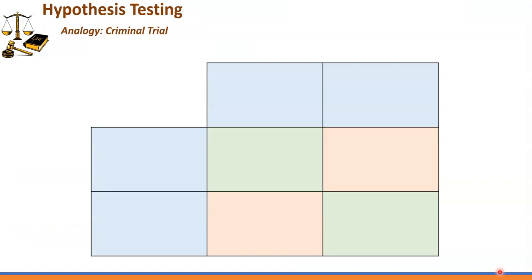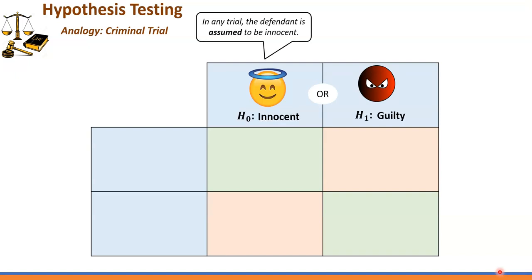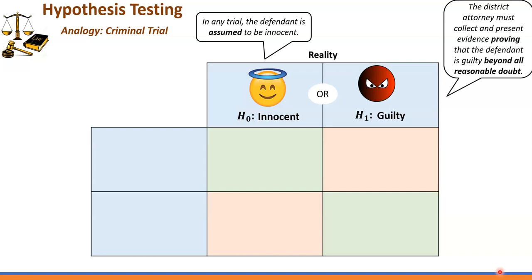Now let's talk about the idea of hypothesis testing. What can help us understand it is to think about a criminal trial. In any criminal trial there is a defendant that can be either innocent or guilty. Importantly, at the beginning of every trial the defendant is assumed to be innocent. The district attorney must collect and present evidence proving that the defendant is guilty beyond all reasonable doubt.